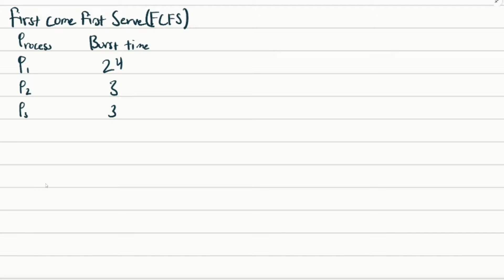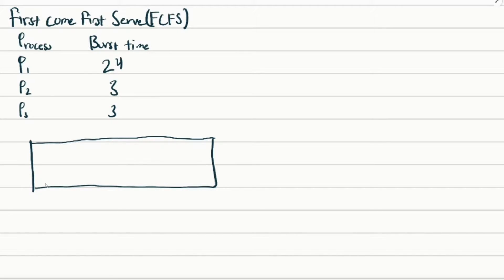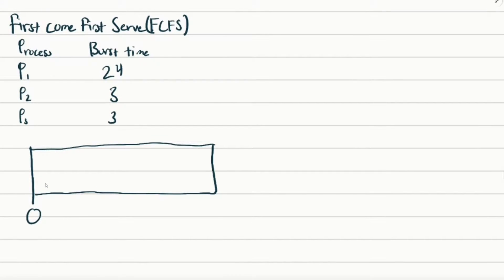Probably the simplest one to calculate is first come first serve. Just think of like a restaurant, like a McDonald's — whoever got in line first will get to order first. So the way we calculate that, we draw something called a Gantt chart and then put our processes in there. We're going to start at time 0, and the first process in line to get serviced is going to be P1.